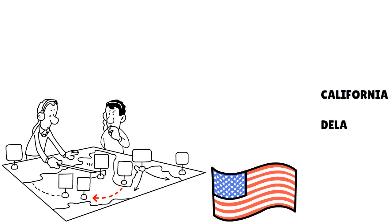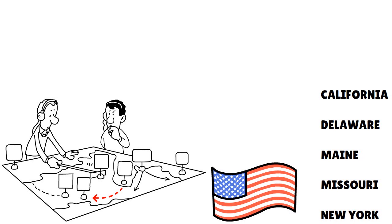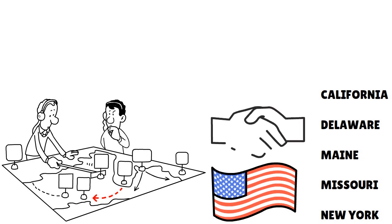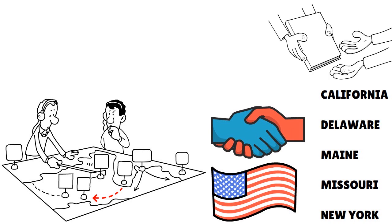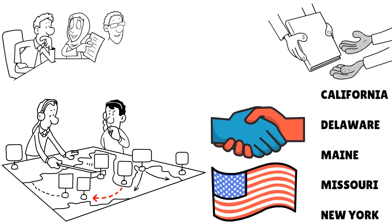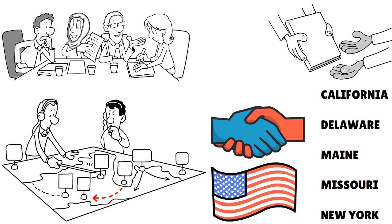California, Delaware, Maine, Missouri, and New York are the only states that require all LLCs to have an operating agreement in place. Still, it is best business practice to have one regardless of whether it is required — for your own protection and for the protection of any members who join the business at some point.